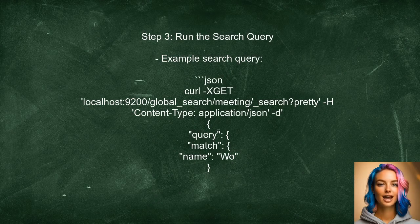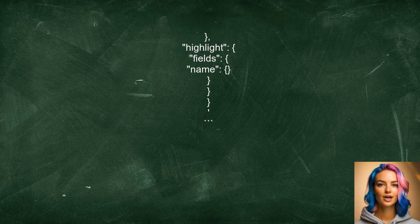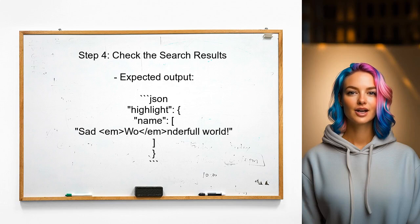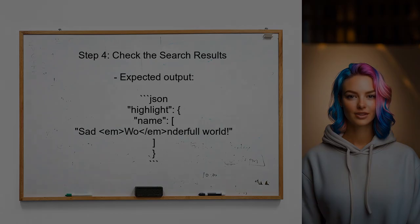Now, the user can run a search query that includes the term they want to match. This query should be structured to utilize the highlight settings defined earlier. Finally, the user should check the results of their search. The highlighted output should now only include the NGram matches rather than the entire word.